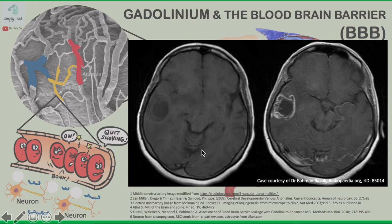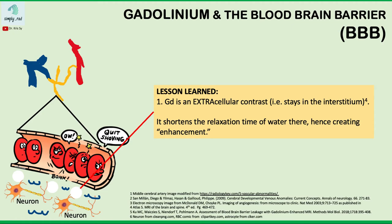Take a look at this example. This is the pre-contrast, and this is the post-contrast study. The periphery of the lesion here shows definite enhancement. The lesson here is that gadolinium is an extracellular contrast, meaning it stays in the interstitium. It shortens the relaxation time of water there, hence creating enhancement.